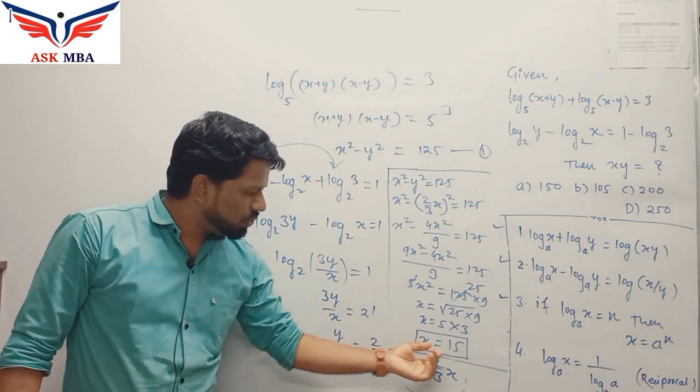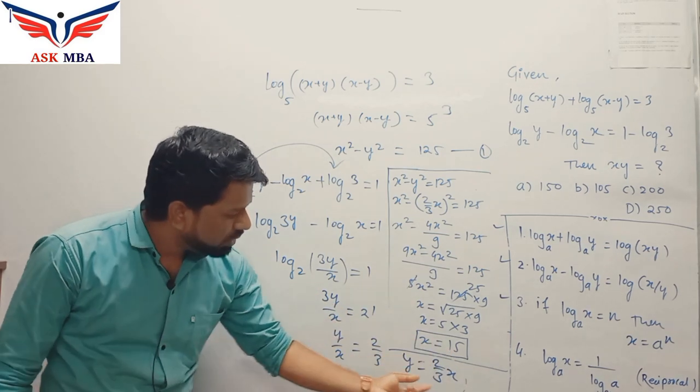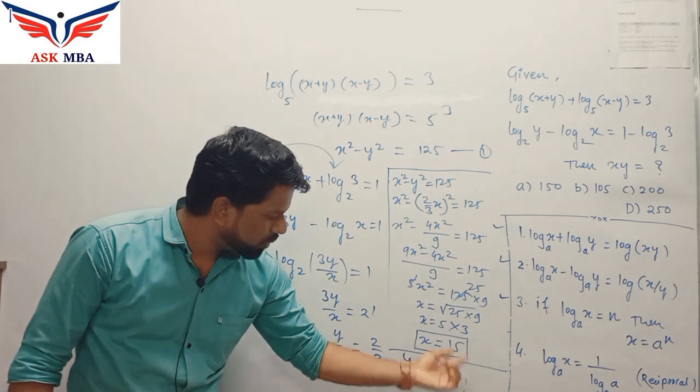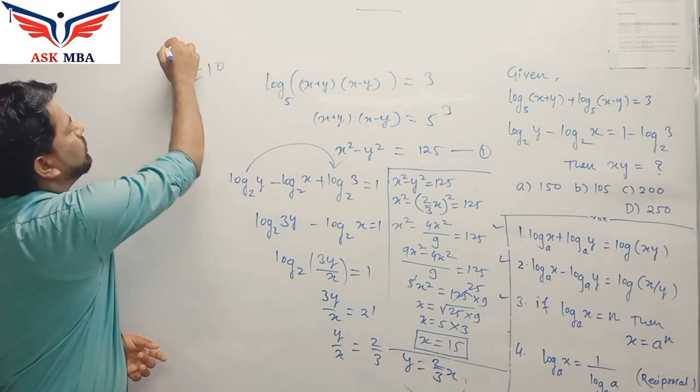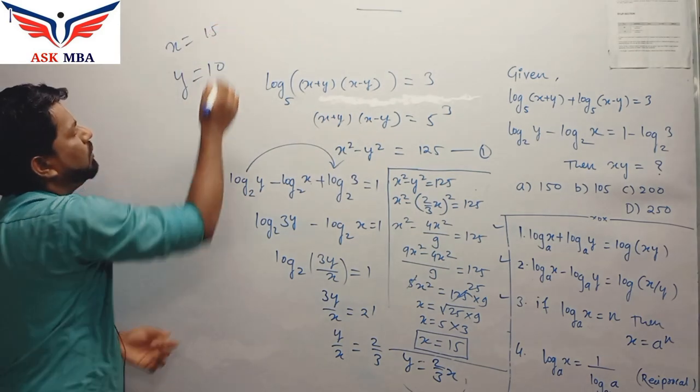So you have x equal to 15. After putting x equal to 15, you will get y is equal to 10. So we have x equal to 15 and y equal to 10.